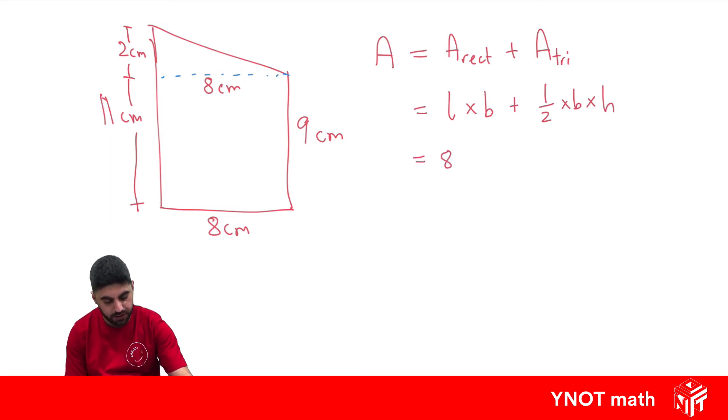rectangle, it's an 8 by 9 rectangle. And for the triangle, the base is 8 and the height is 2. And now we just have to put all this together. So 8 times 9 is 72, plus a half times... 8 times 2 is 16. 72 plus a half times 16 is 8. And 72 plus 8 is 80 centimeters squared. Just make sure you don't forget your units squared when